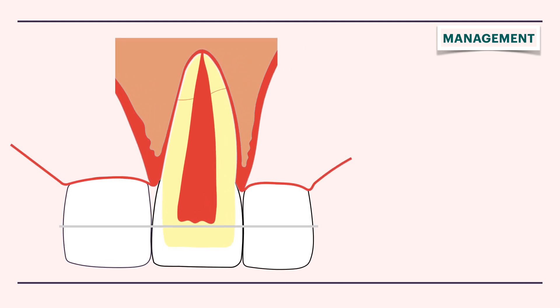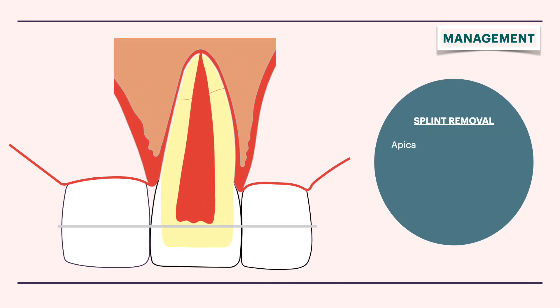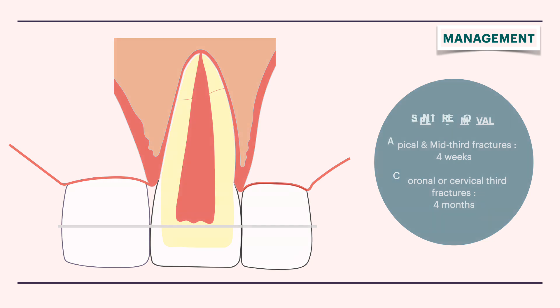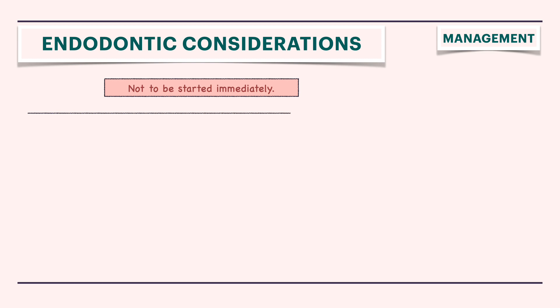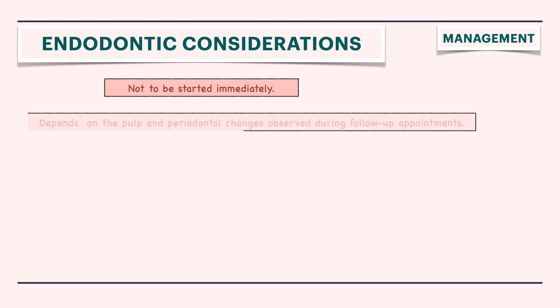The fractured tooth should be stabilized for four weeks in case of middle and apical third fractures, and for four months in case of cervical third fractures. The endodontic treatment should not be started immediately; it will depend on the pulp and periodontal reactions observed during follow-up appointments.